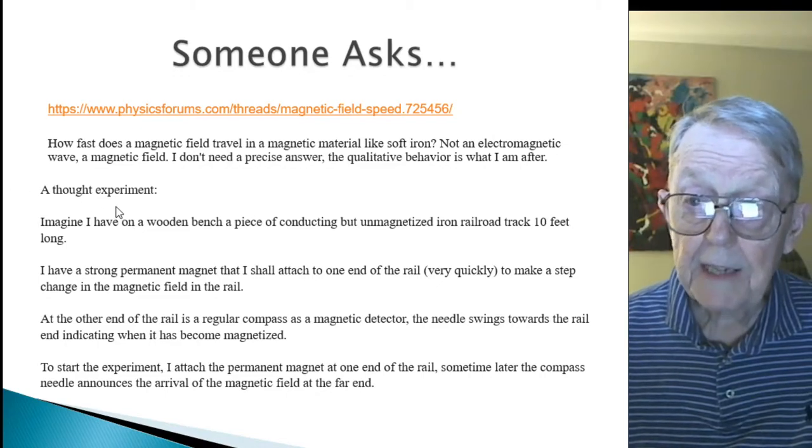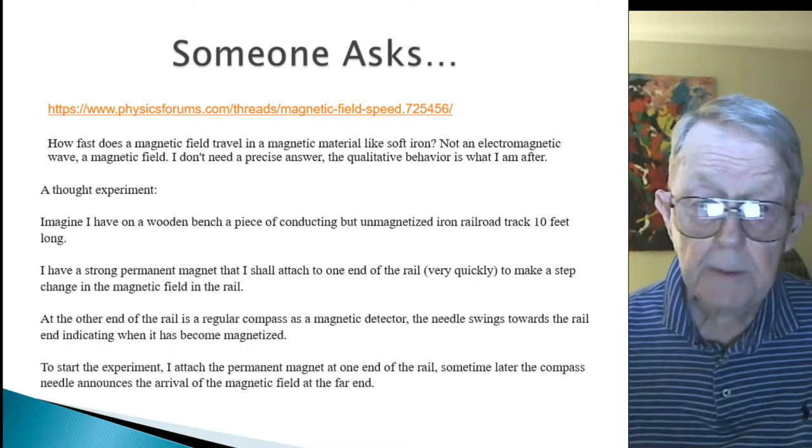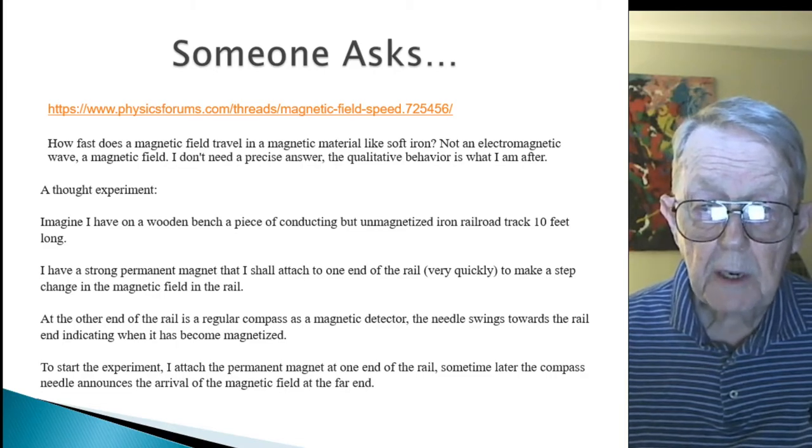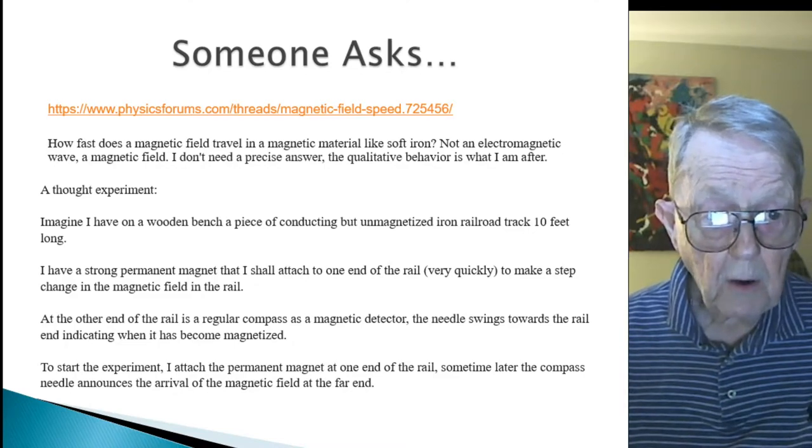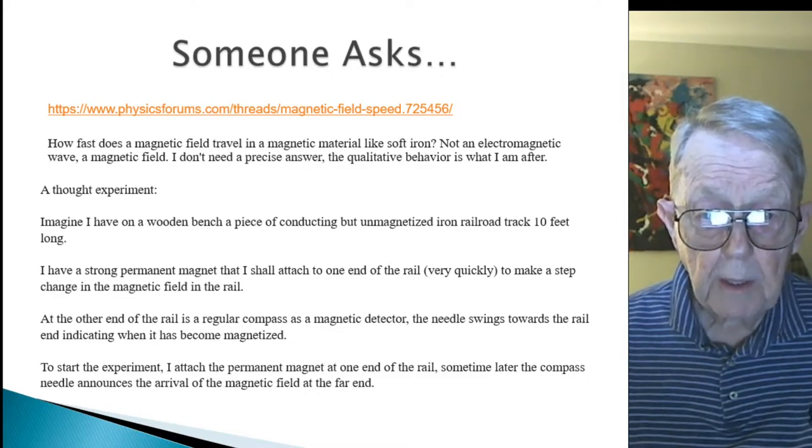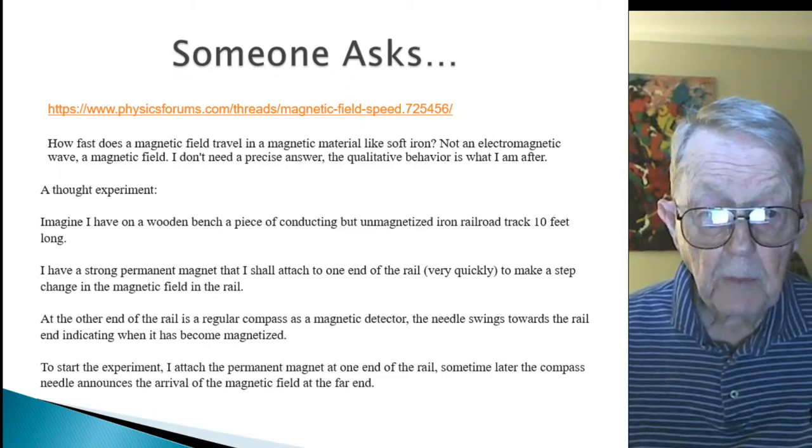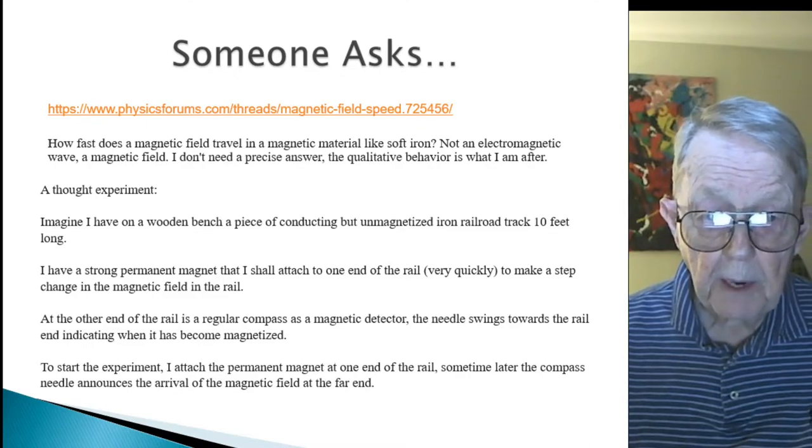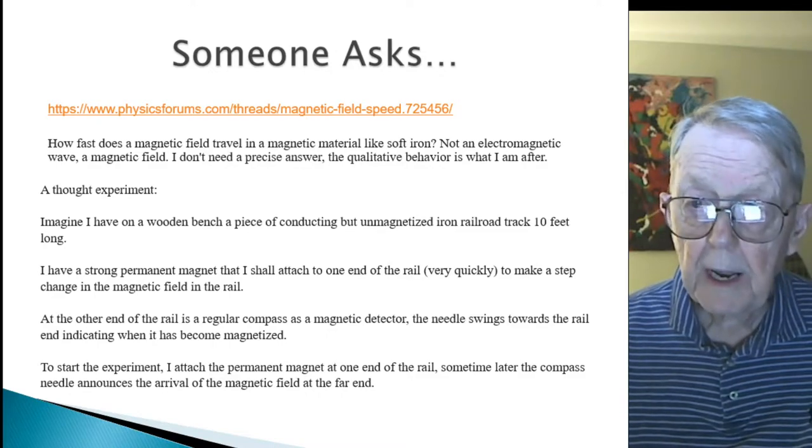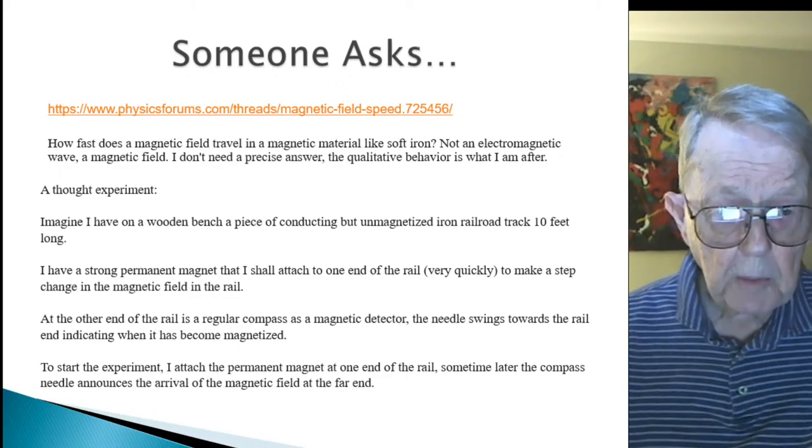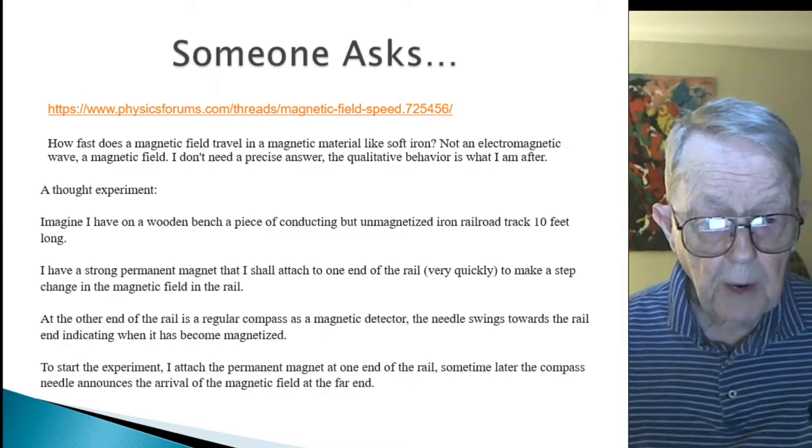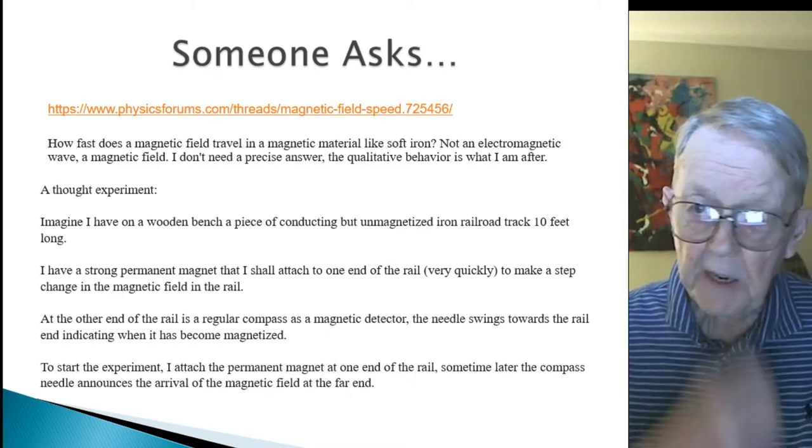So the person answering suggests this, a thought experiment. Imagine I have a wooden bench, on a wooden bench, a piece of conducting but unmagnetized iron, a railroad track ten feet long. I have a strong permanent magnet, and I shall attach to one end of the rail very quickly to make a step change in the magnetic field in the rail. At the other end of the rail, a regular compass or magnetic detector. The needle swings towards the rail indicating when it has become magnetized. To start the experiment, I attach the permanent magnet to one end of the rail. Sometime later, the compass, a needle, announces the arrival of the magnetic field on the far end. Interesting experiment.